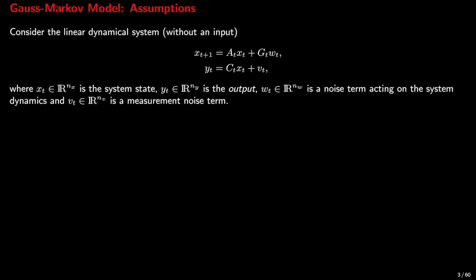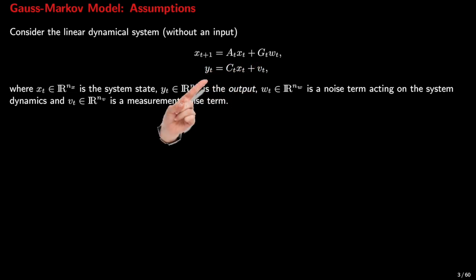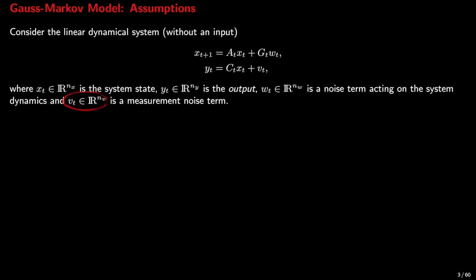Let's get started with the Gauss-Markov model. Consider a linear dynamical system of the form: X_{t+1} = A_t X_t + G_t W_t, and Y_t = C_t X_t + V_t. Here X_t is the system state, Y_t is the output vector, W_t is an error term acting on the dynamics known as the process noise, and V_t is the measurement error, also known as the observation noise.